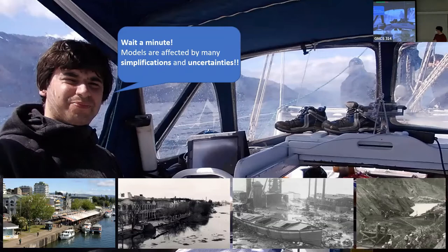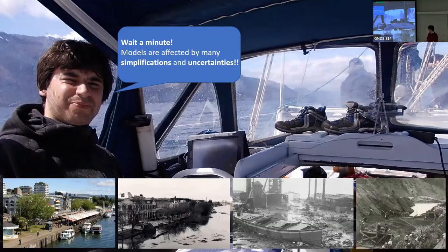Valdivia is very famous because it was the closest city to the greatest earthquake in the world: the 1960 earthquake, magnitude 9.5 on the Richter scale. That earthquake was so massive that you can actually see the difference in the landscape before and after — this picture was taken last summer when I was in Chile. That big event was associated with one of the biggest tsunamis ever modeled or recorded.